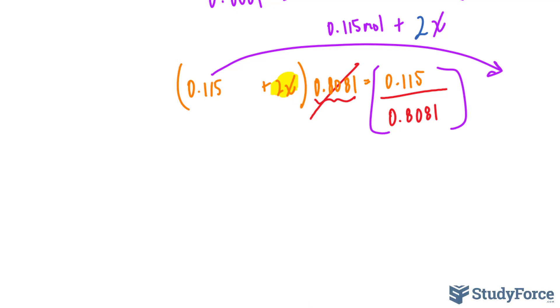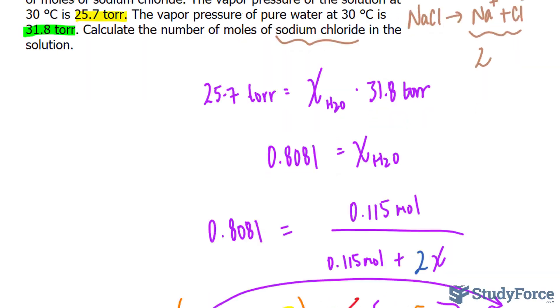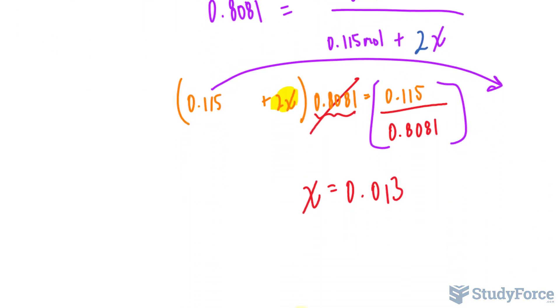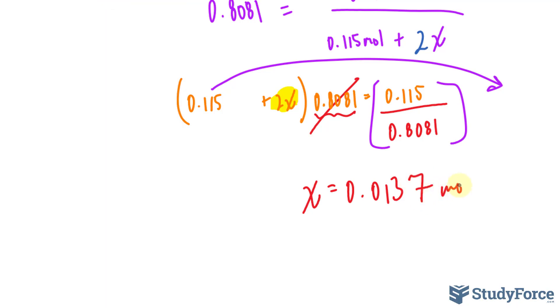And we get x is equal to 0.013, and let's make sure that we have the correct number of significant figures, it should be 3 significant figures. So, the first discarded number is the 5, and 6 is the first kept number, since 5 is followed by other numbers, we can push that up to 7 moles.